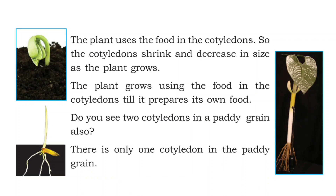The plant uses the food stored in the cotyledon. So as the plant grows, the cotyledon shrinks and decreases in size. The plant grows using the food in the cotyledon until it is able to prepare its own food.